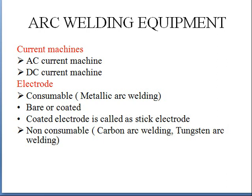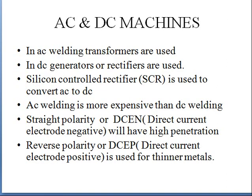In arc welding, every electrode has a flux coating. Flux is used to protect the weld from oxidizing with environmental gases. As the consumable electrode melts and joins both metals, the flux forms a layer of slag over the joint. Once the metal cools, you hammer and remove this excess slag material. The purpose of the slag is to protect the weld from oxidizing with the air.